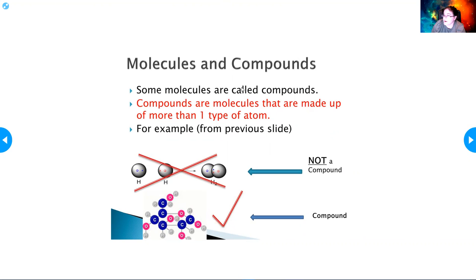Some molecules are called compounds. Compounds are molecules made up of more than one type of atom. Two hydrogen atoms bonded together is not a compound, but when you get two or more different elements bonded together, that makes a compound.